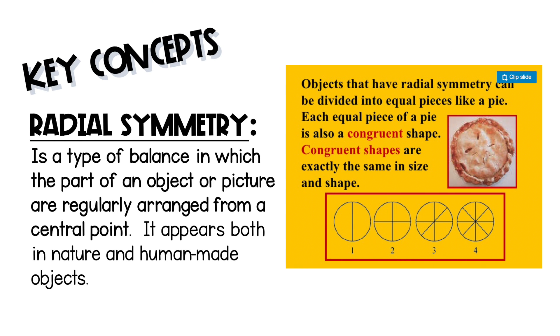Your key concept is radial symmetry. That's a type of balance in which the parts of an object or picture are regularly arranged from a central point. It appears both in nature and human-made objects.